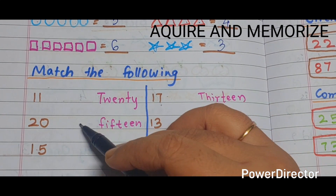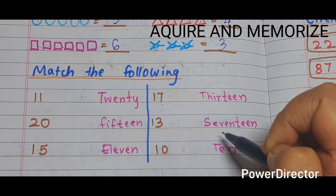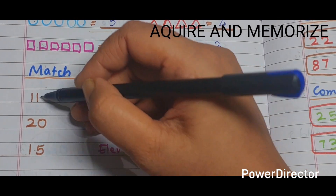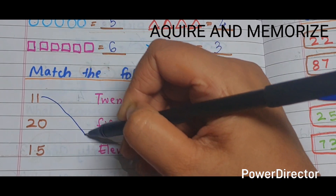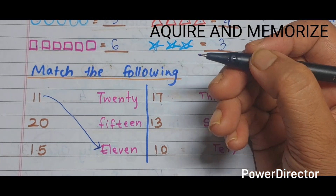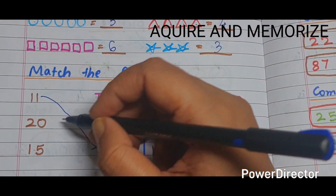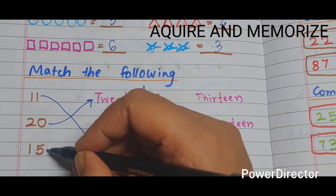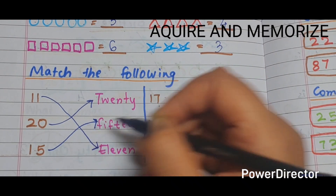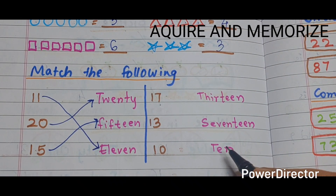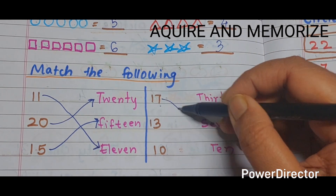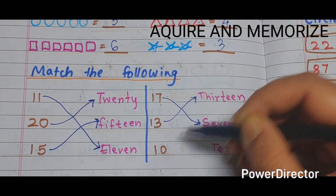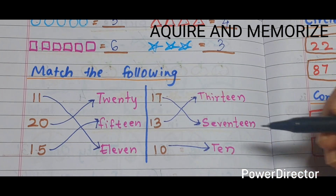Next section is 'match the following'. Numbers are given and number names are beside them — we match them. 11 — match with ELEVEN. 20 — match with TWENTY. 15 — match with FIFTEEN. 17 — match with SEVENTEEN. 13 — match with THIRTEEN. 10 — match with TEN.